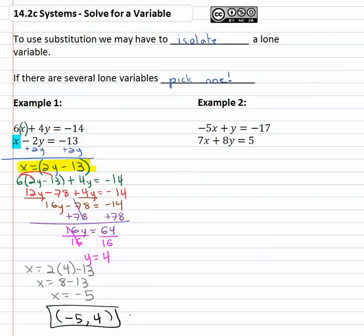Let's take a look at another problem where we have to do some work to find that lone variable that's equal to stuff. In example two, there is one lone variable that would be easy to solve for.